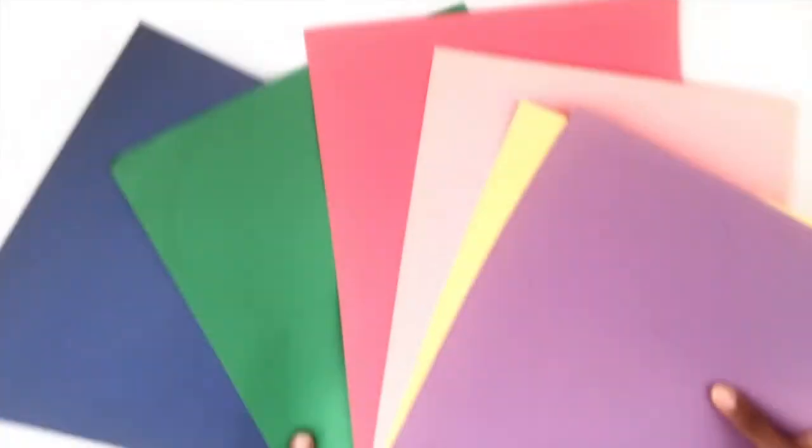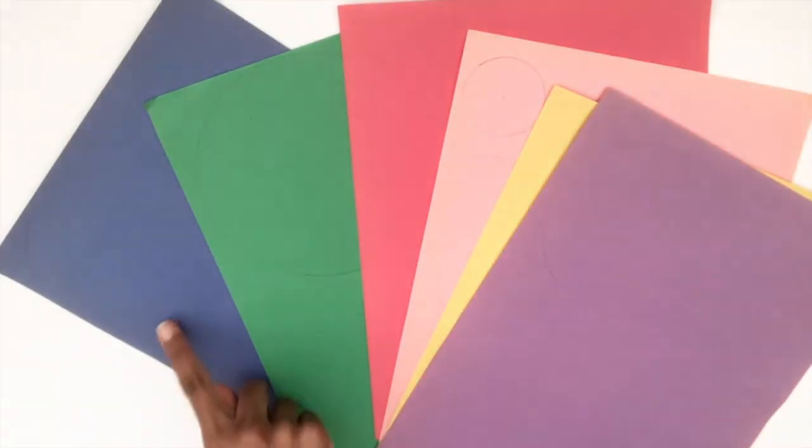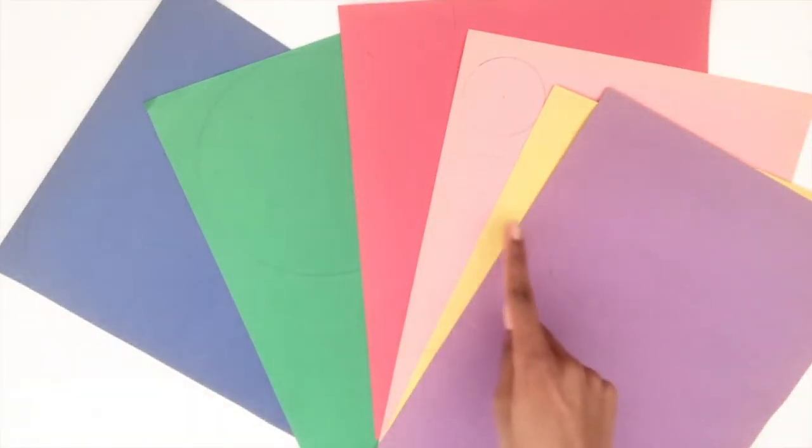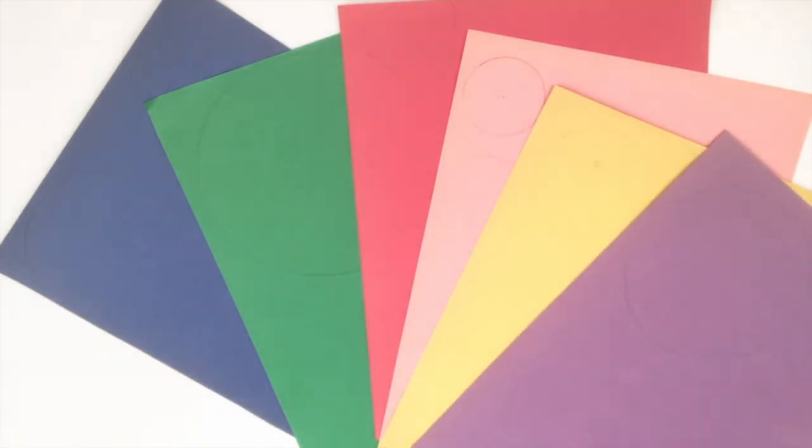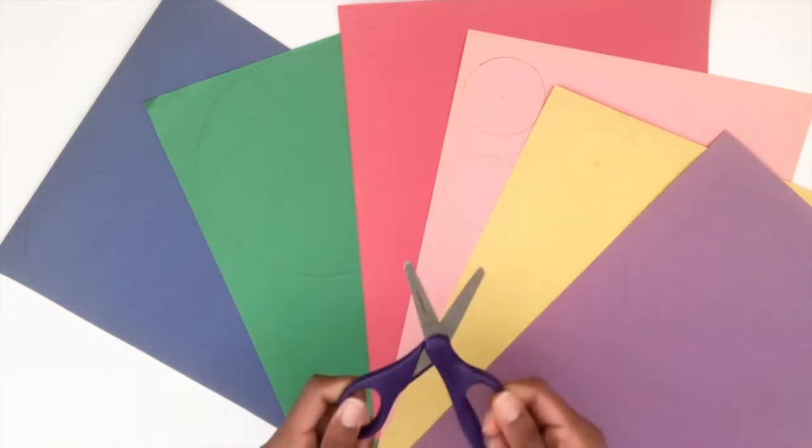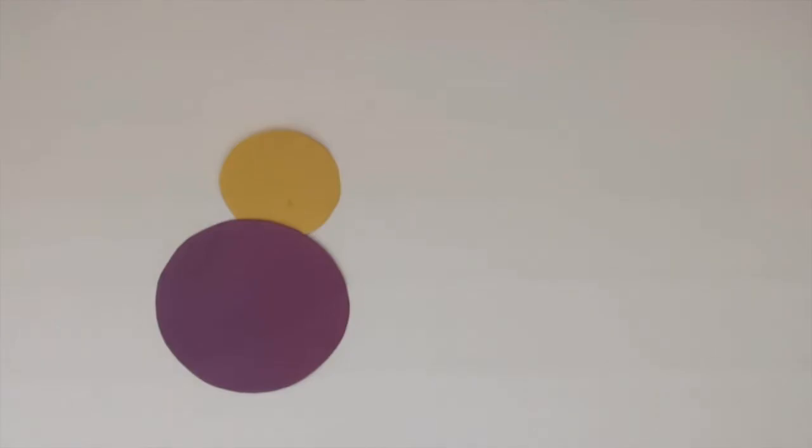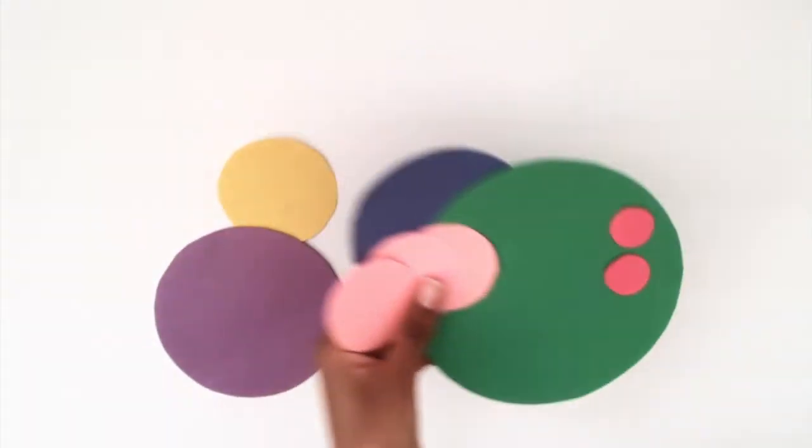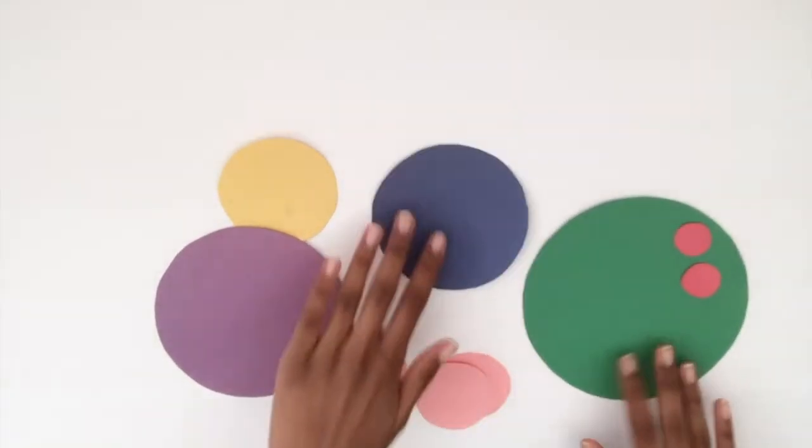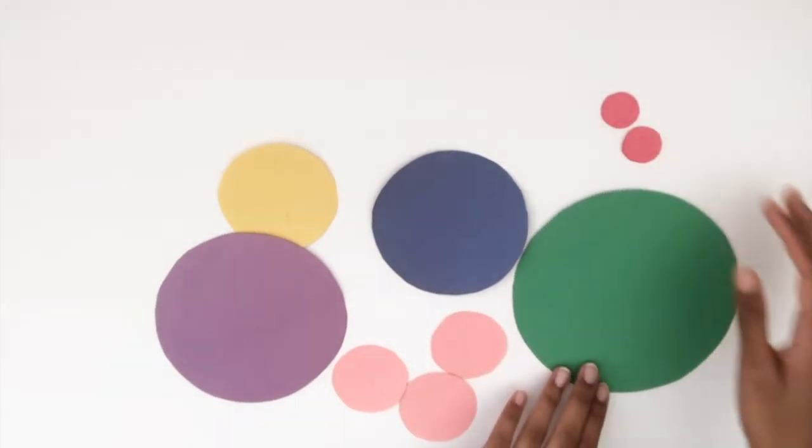After we're done, you should have a bunch of colored paper with different sizes of circles. Isn't it cool how all of these circles were made from the Fibonacci sequence? Now, all you have to do is cut them out. And voila! All your circles are now cut out and ready for the next step of the project.